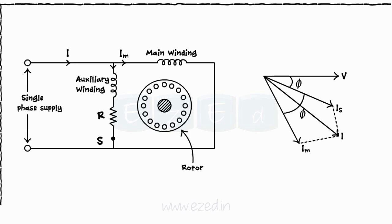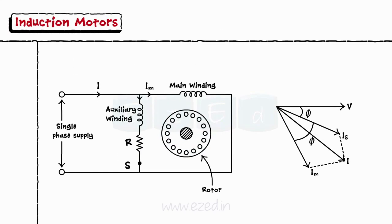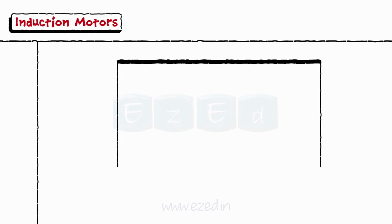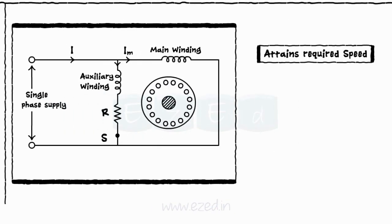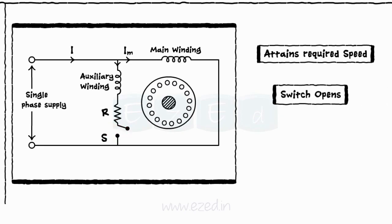Thus, IS lags behind applied voltage V by small angle whereas IM lags the voltage V by large angle. This creates the large split between two current phases. And as there is a split between the two currents, this motor is called split phase motor. Once the motor starts the rotation and attains considerable amount of speed, the centrifugal switch goes off disconnecting the auxiliary winding from the main winding, and motor continues to work on the main winding only.